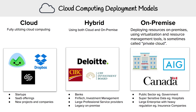So in some capacity they are using cloud, but it's totally possible that if they started from day one, they would just only use cloud. For example, CIBC, which is a bank, the CPP Investment Board, which is an investment board in Canada, and Deloitte, which is a large professional service provider. So those are the three cloud computing deployment models.